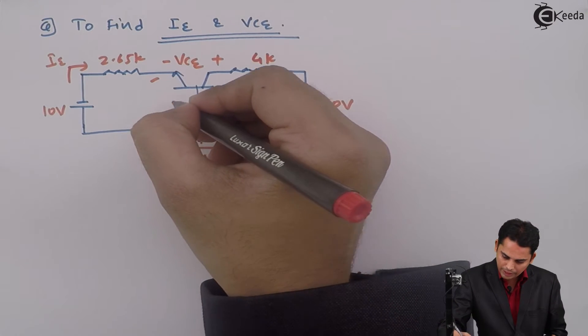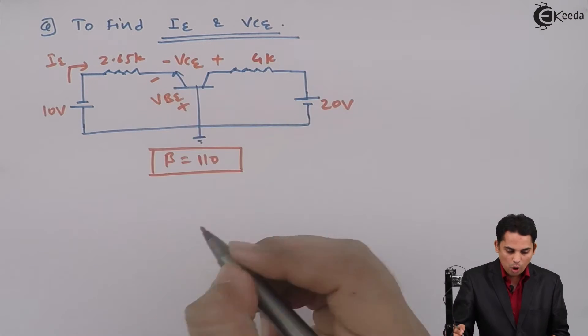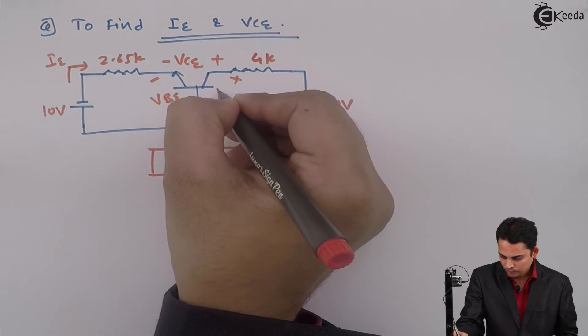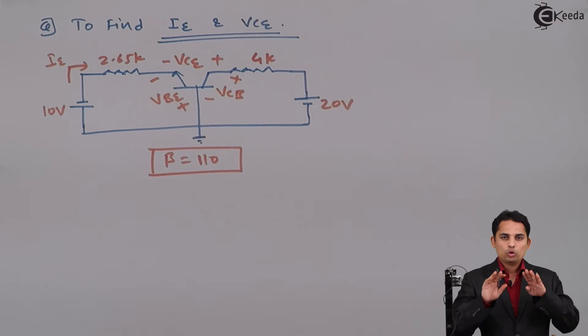What we'll do is we'll try to apply KVL to the input in order to get IE, and then we will apply KVL to the entire network to find out VCE.